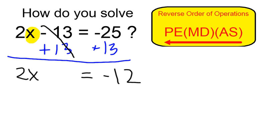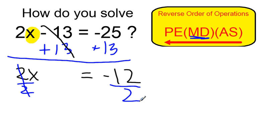So now I have 2x is equal to negative 12. I can get my x alone by now moving towards my multiplication and division part of my order of operations — divide both sides by 2. If I do that on one side, I do it on the other. So I arrive at a final answer of x is equal to negative 6.